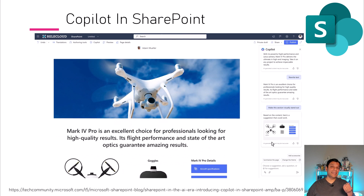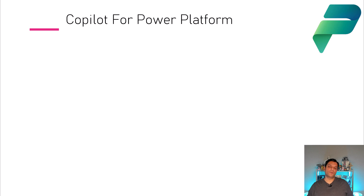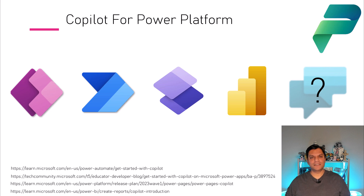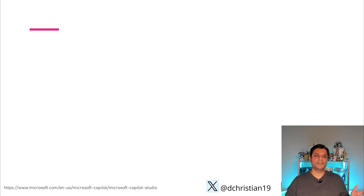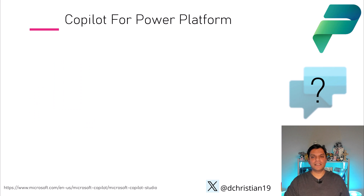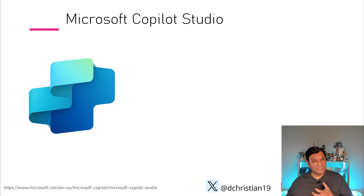Now let's switch gears and look at Copilot for Power Platform. Copilot is introduced in Power Apps, Power Automate, Power Pages, and Power BI — known as Microsoft Fabric. As for Microsoft Virtual Agents, also known as PVA, a change is happening: PVA is being transitioned to Microsoft Copilot Studio. This transition detaches it from the Power Platform family entirely — that is the big difference you need to be aware of.